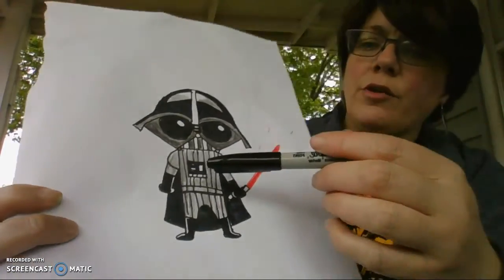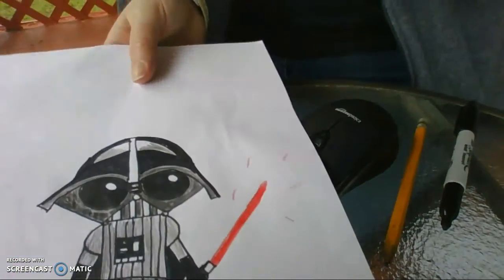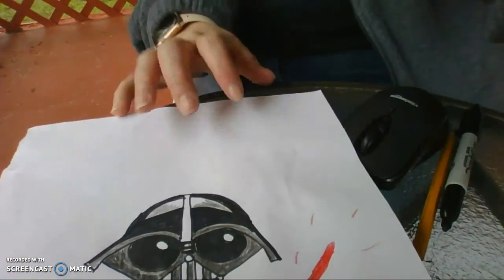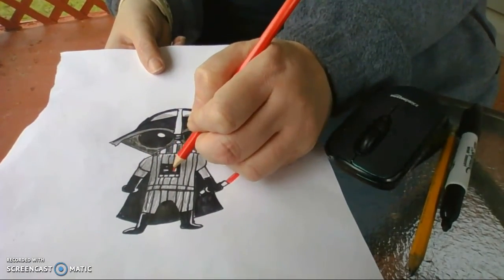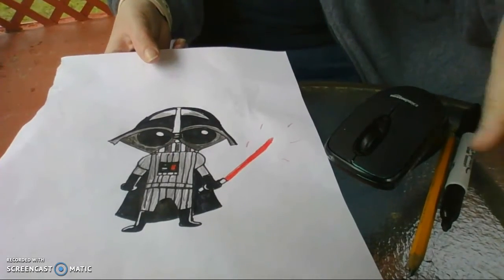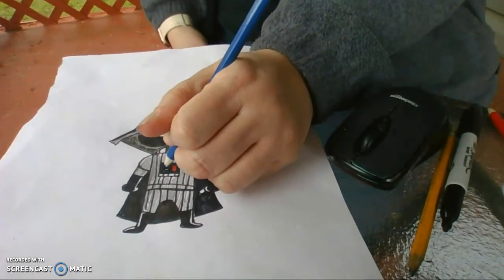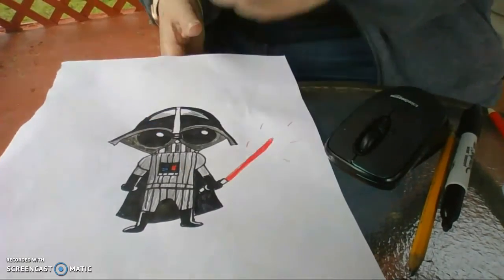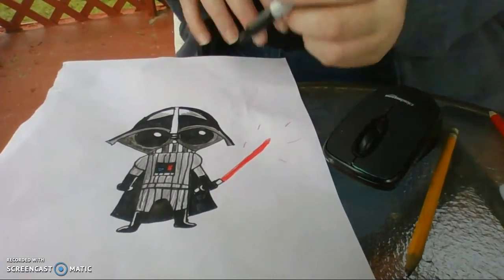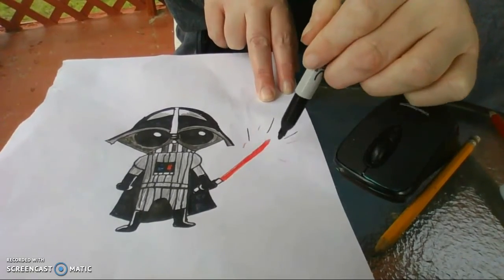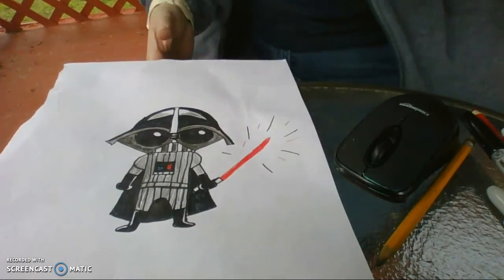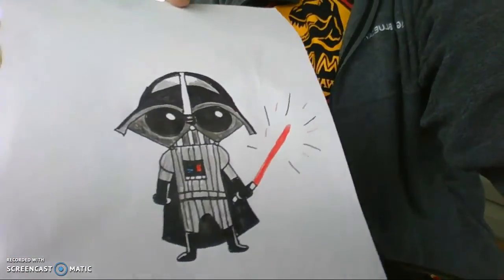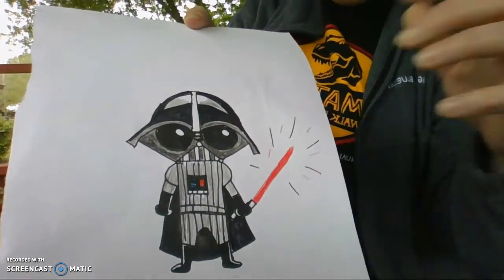And then I took a red and blue. And we colored these little, actually, I didn't color those. Let's color those real quick. So right here, I'm going to color these little boxes red and blue. And then I'm going to take a black marker and just kind of go along with the red to show that his lightsaber is lighting up. So there we go. There's our awesome Darth Vader.